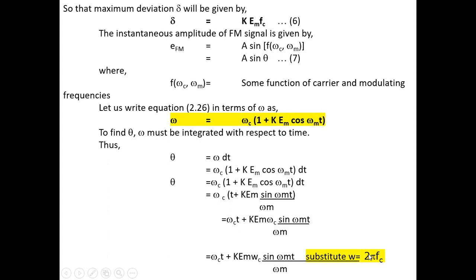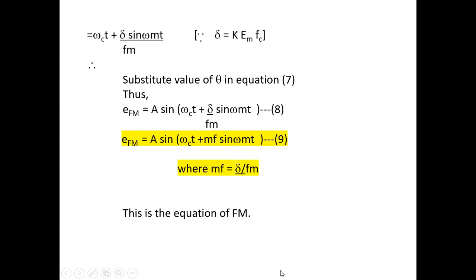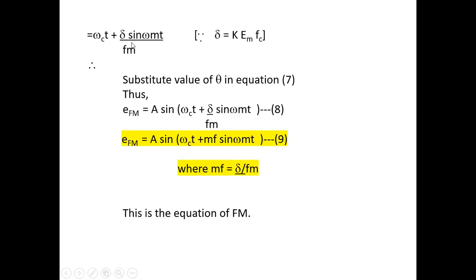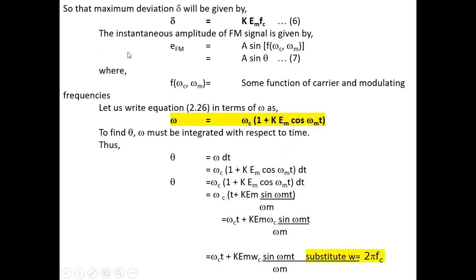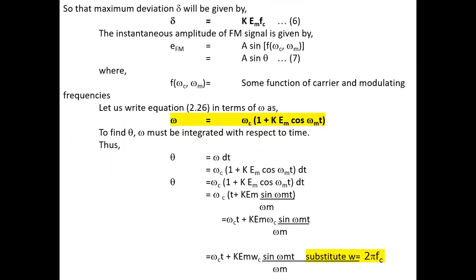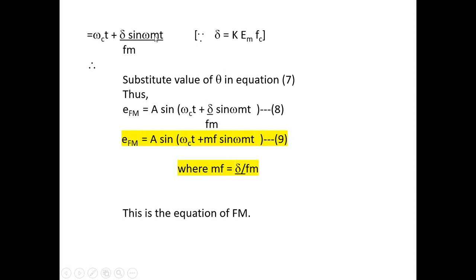The equation can be further simplified by substituting ω = 2πf. Substituting 2π·fm in both numerator and denominator, the common 2π terms cancel. As a result, the equation becomes θ = ωc·t + Δ·K·EM·ωc·sin(ωm·t) / FM, where the suffix m denotes the modulating frequency.